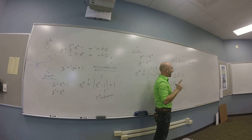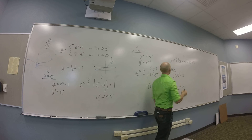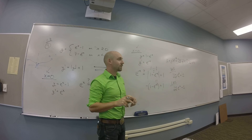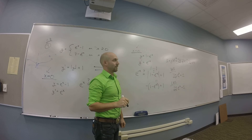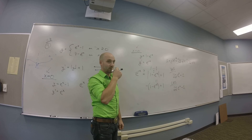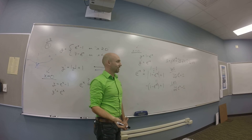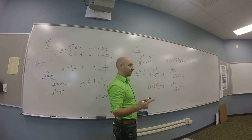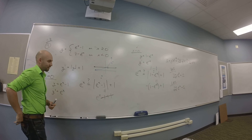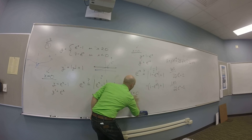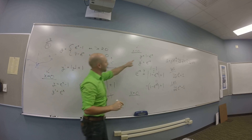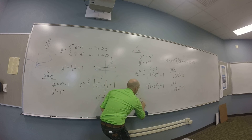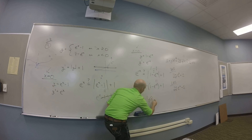Both one-sided limits agree, so y prime of zero equals 1. Now I'm still trying to solve the differential equation — I need to check that at x equals zero. Is y prime of zero equal to the absolute value of y at zero, plus 1?